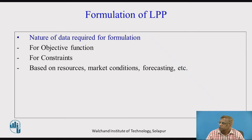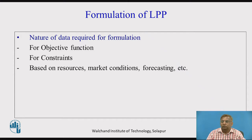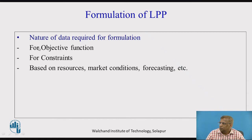Coming to the nature of data that we have, we need to really understand what form the data takes, and once we understand that, we will be in a position to convert this real-life situation into mathematical form. So for objective functions and constraints, how can we get that data?